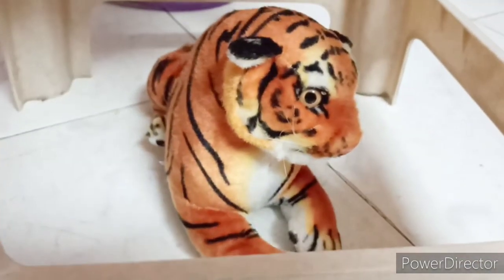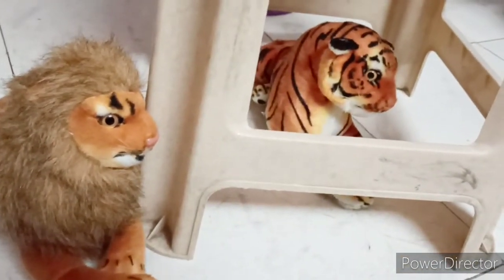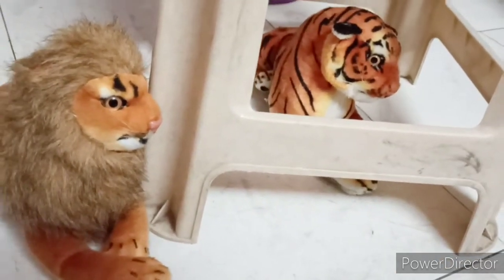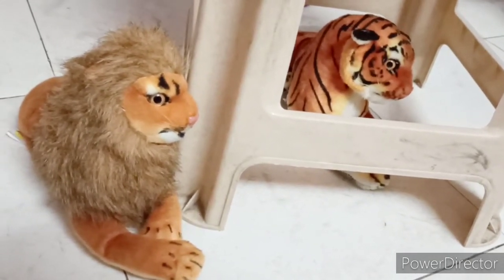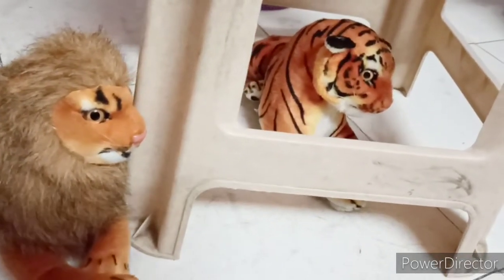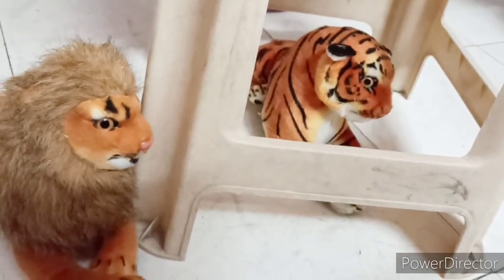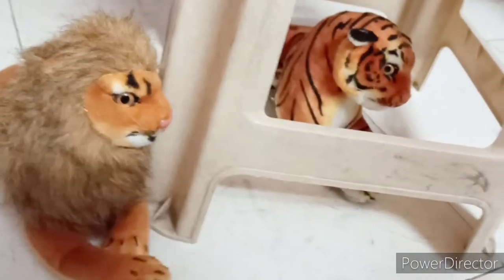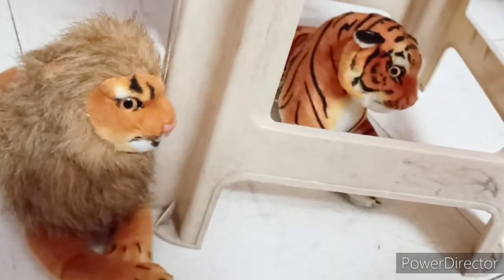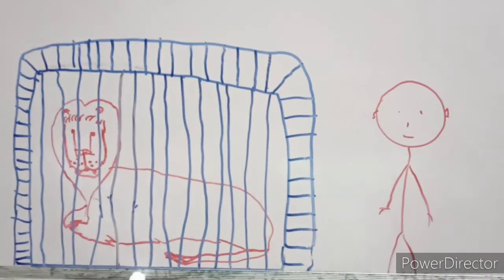Now see here, kids — you can see a lion and a tiger. Which is inside and which is outside? The tiger is inside and the lion is outside. You can see a cage — the tiger is inside the cage and the lion is sitting outside. So lion is outside, tiger is inside. Understood? Inside and outside.